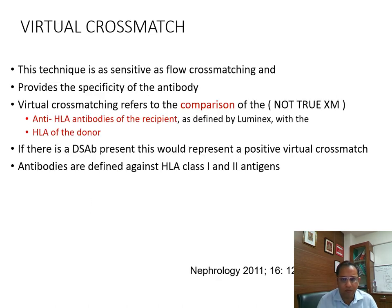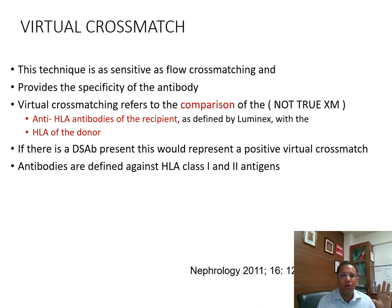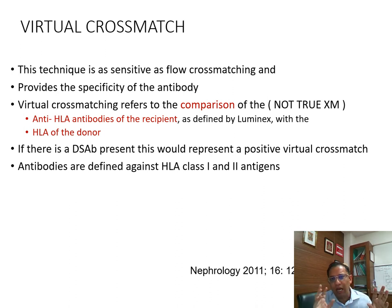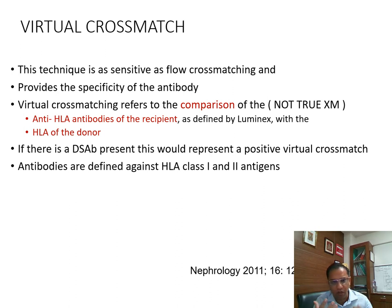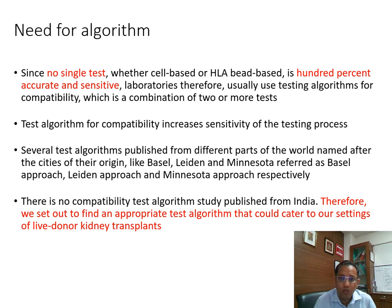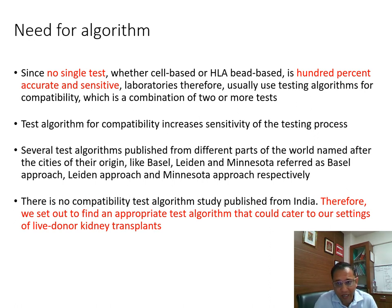The virtual crossmatch is straightforward: do a single antigen bead assay in the patient to identify antibodies, and do a donor HLA typing to identify antigens. If an HLA antigen is present in the donor and the corresponding antibody is present in the patient, that is a positive virtual crossmatch. If the antigen is present in the donor but there is no corresponding antibody in the patient, that is a negative virtual crossmatch.